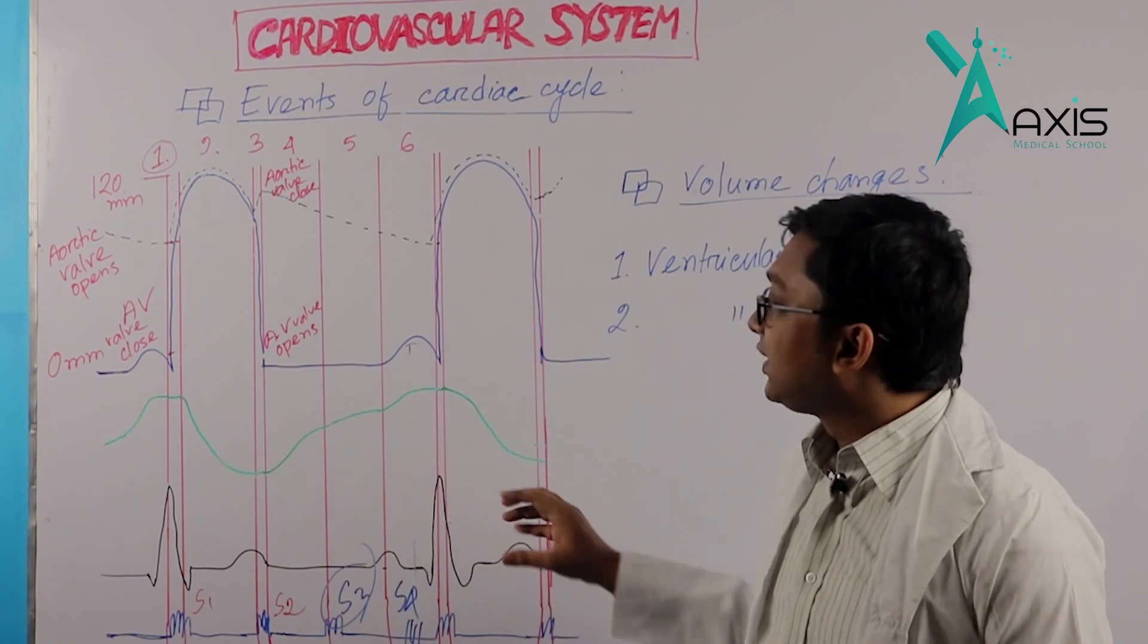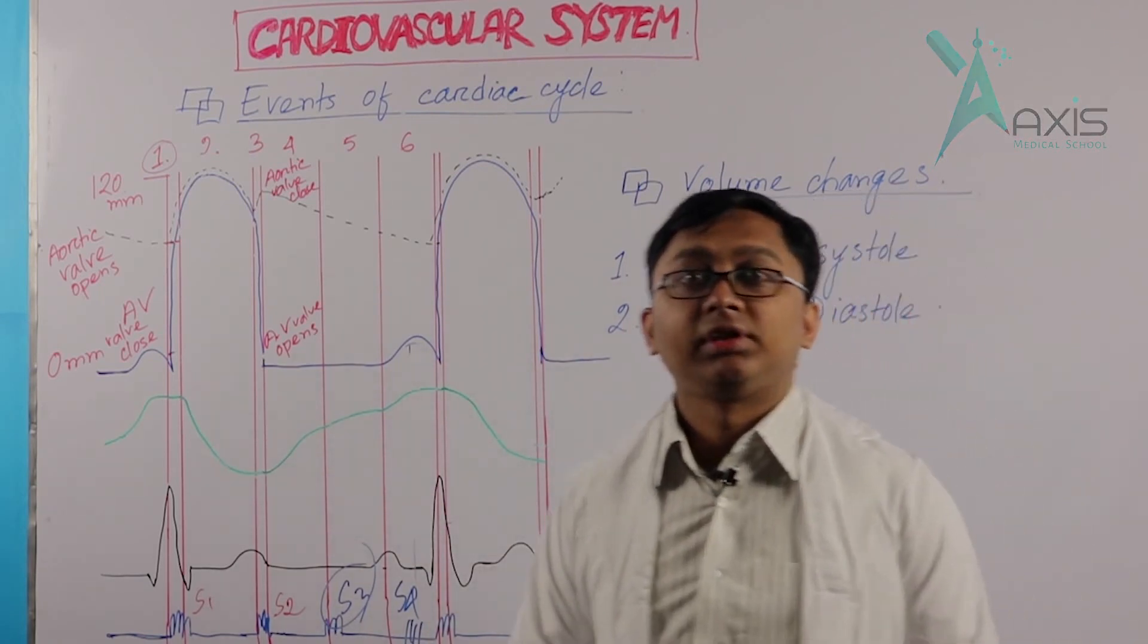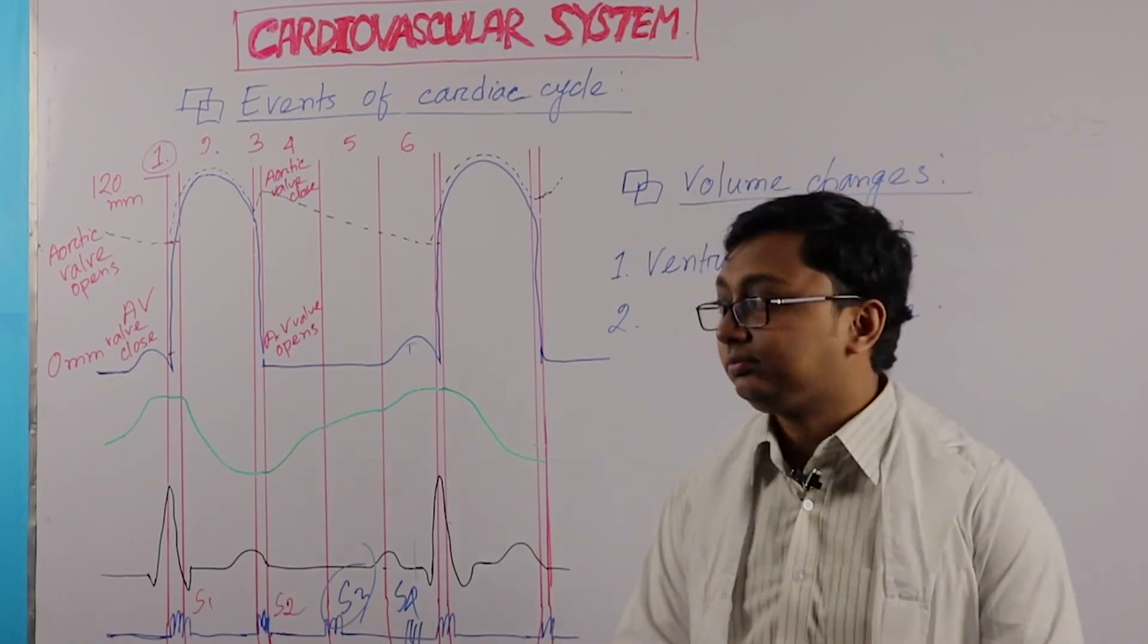So, these are the volume changes during the cardiac cycle.